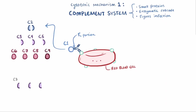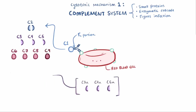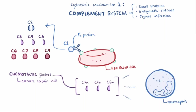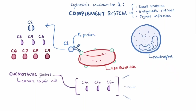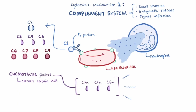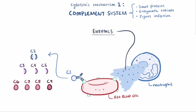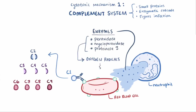The cleaved fragments — C3a, C4a, and C5a — act as chemotactic factors, meaning they attract certain cells, in this case neutrophils. Once neutrophils join the party, they degranulate, dumping a bunch of enzymes like peroxidase, myeloperoxidase, and proteinase 3, which all help generate oxygen radicals that are highly cytotoxic to cells and can cause tissue damage.